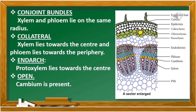To review — in a dicot stem, the vascular bundle is described by four terms. First, conjoined: xylem and phloem lie on the same radius, as you can see in the picture. Second, collateral: xylem lies towards the center, towards the pith, and phloem lies towards the periphery. You can see this arrangement in the picture.